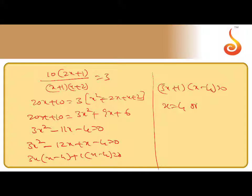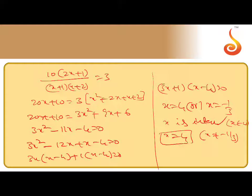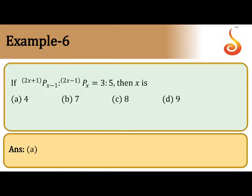So x equals 4 or x equals minus 1 by 2. But here x is greater than or equal to 0, and x is an integer. x can be an integer means x belongs to whole numbers. So x equals 4, but not minus 1 by 2. Therefore, x equals 4 is the right answer. Check the answer: 4 is the right answer.